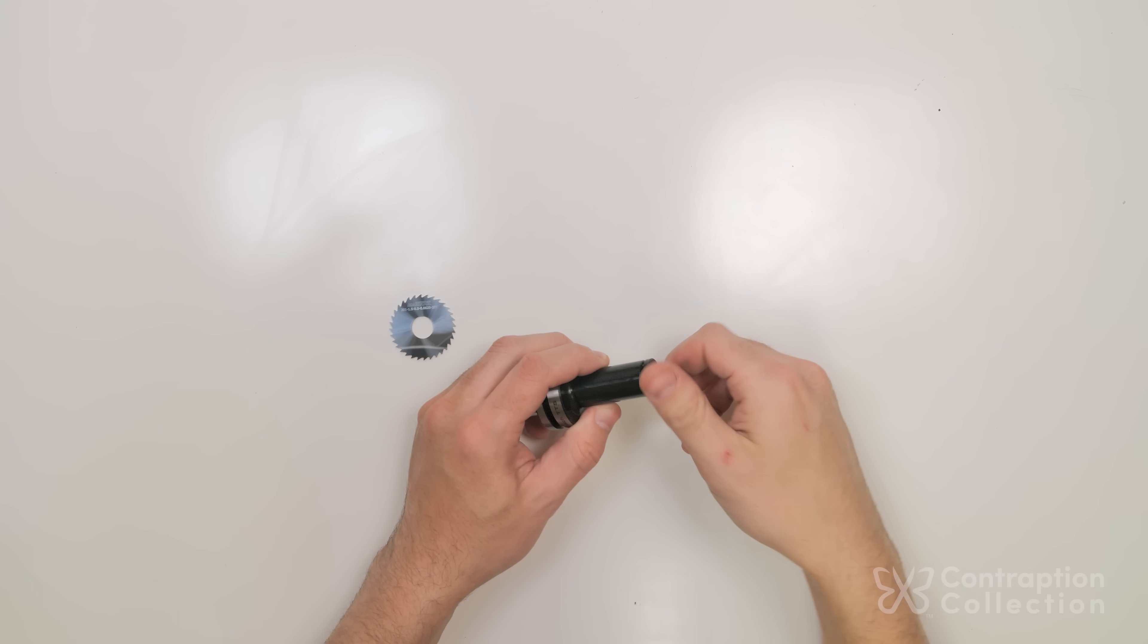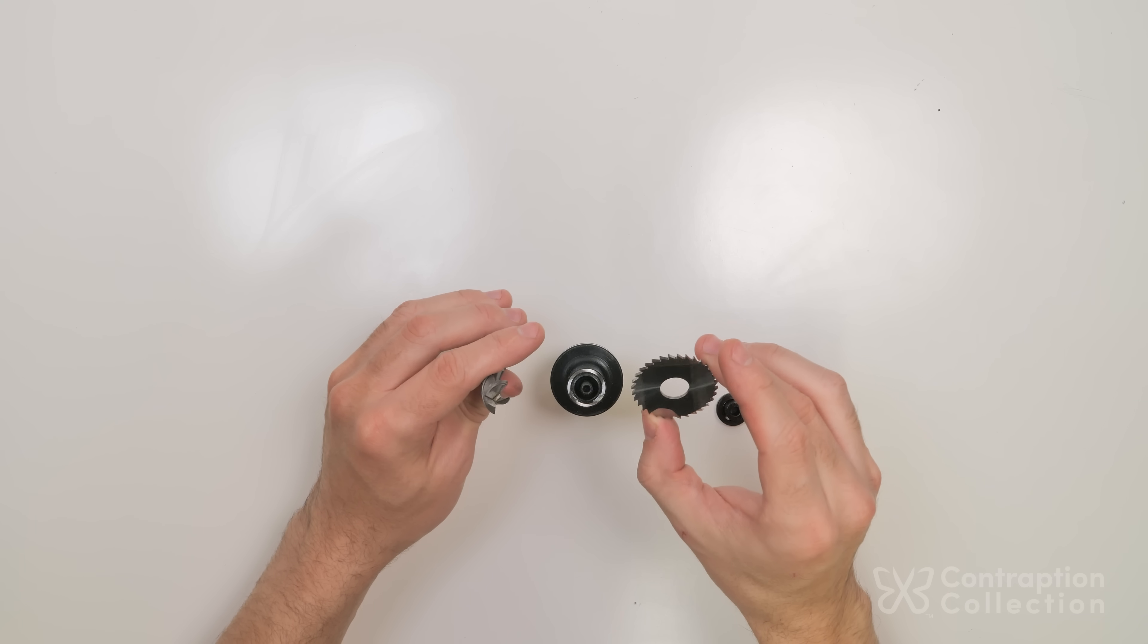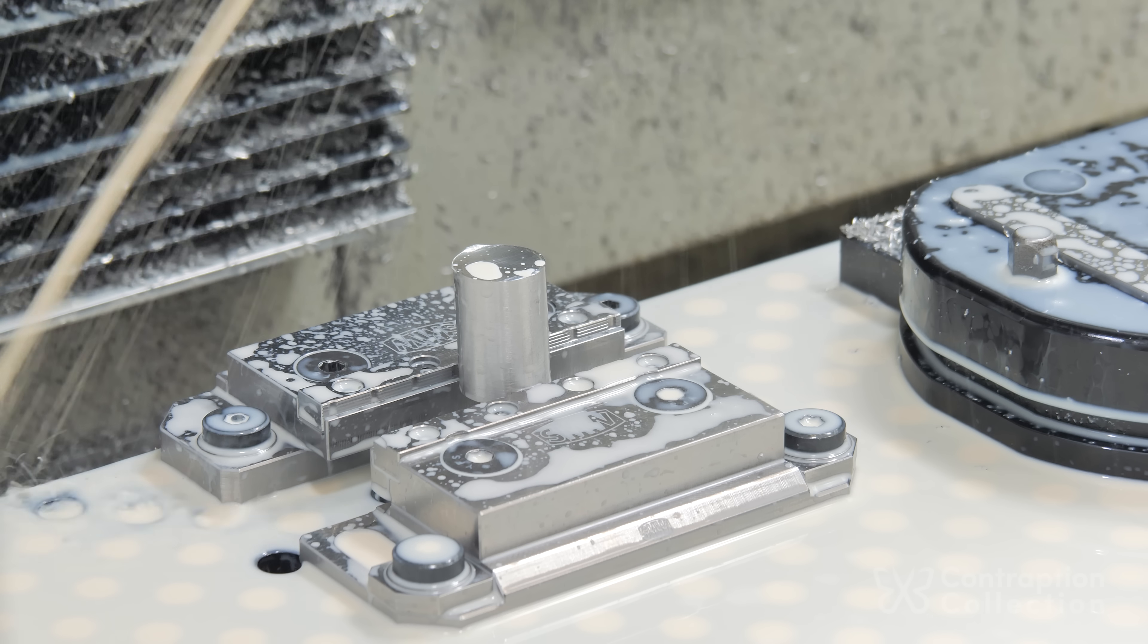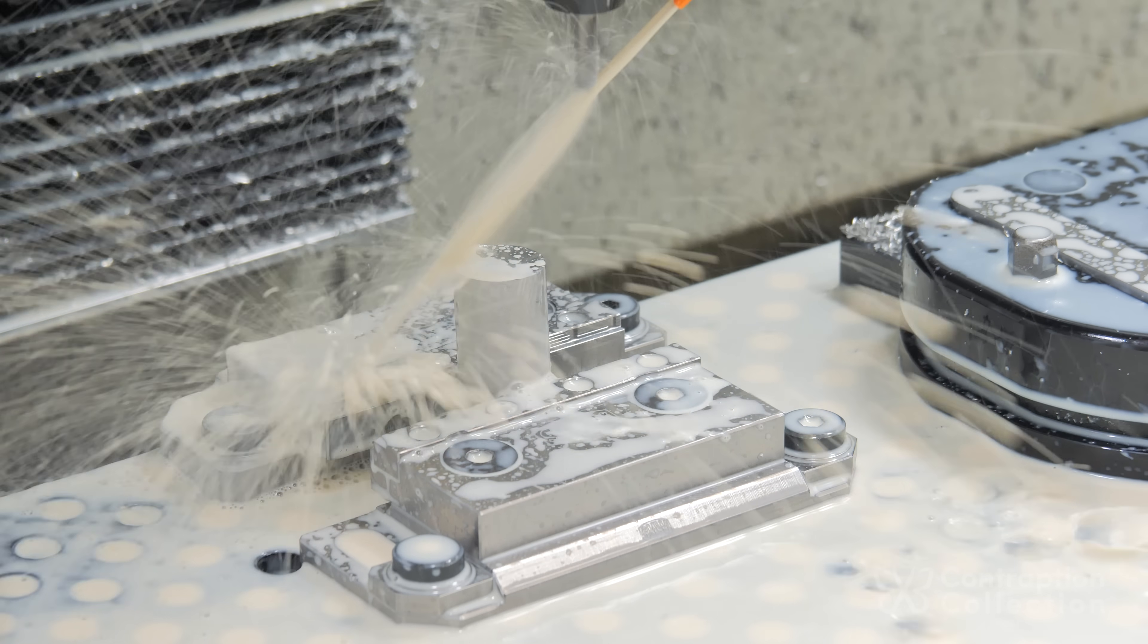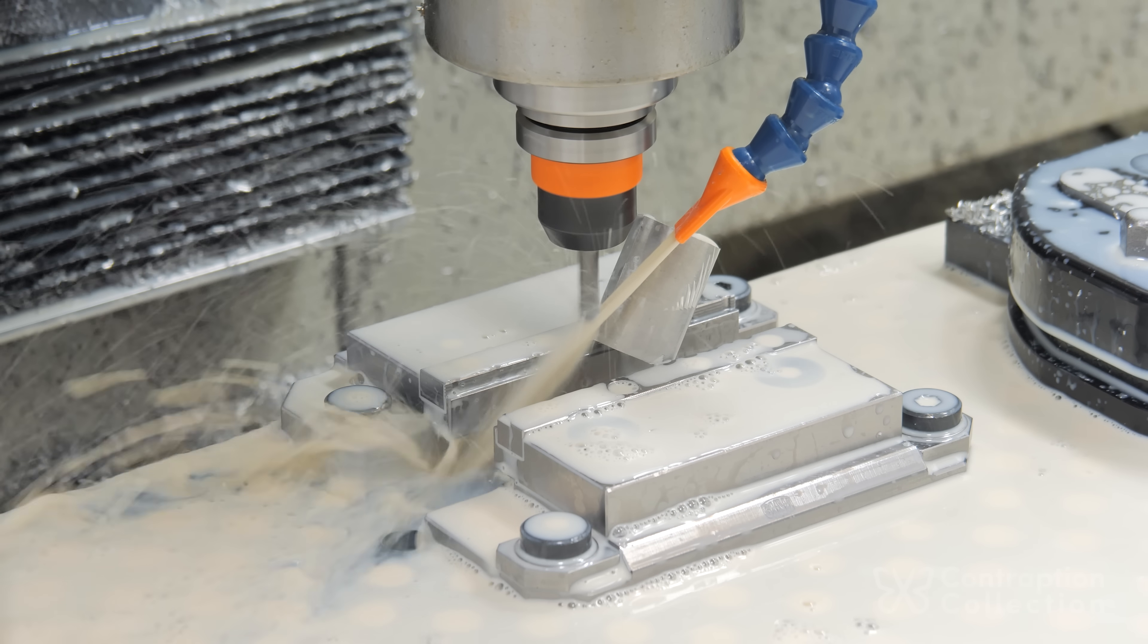Here's the slitting saw and arbor. I have to make sure I don't put it on backwards. I want it to cut the same way as an end mill. My first attempt didn't go so great. I hoped the serrated jaws would be enough to hold the stock in place, but nope. It's never a good idea with round stock.